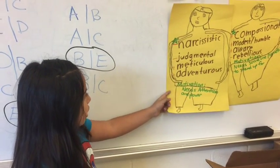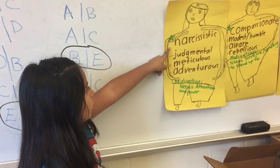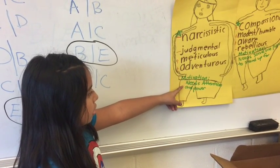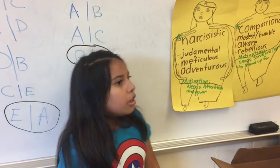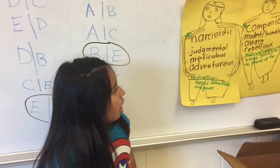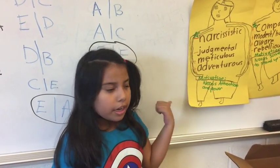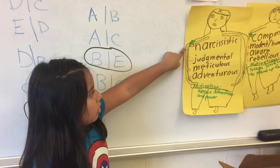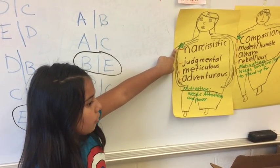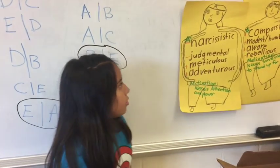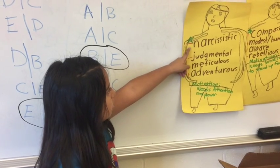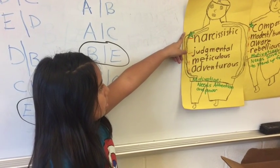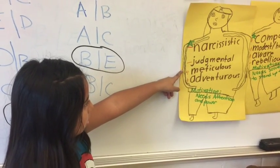This is Character A. Its character traits are narcissistic, judgmental, meticulous and adventurous. Its motivation needs attention and power. A influences mostly other characters and we put a star right here so we can know what character trait we should act out for our opera. We made — two of our students made drawings for each one so we can know what character they are and who they think they should be.